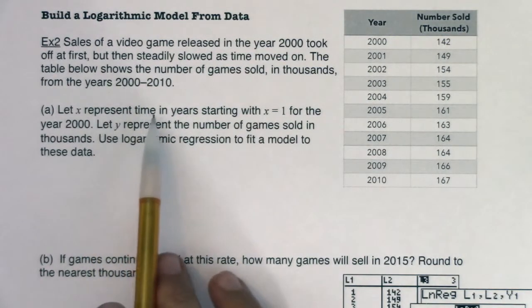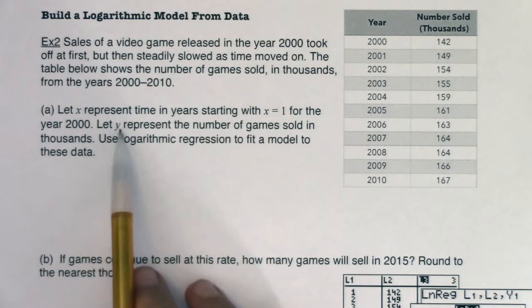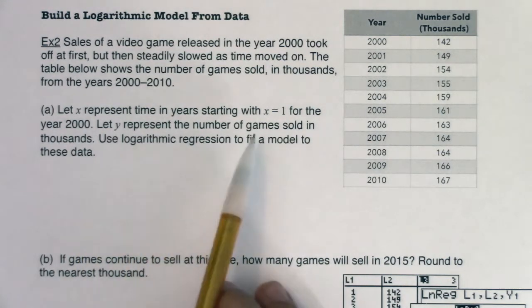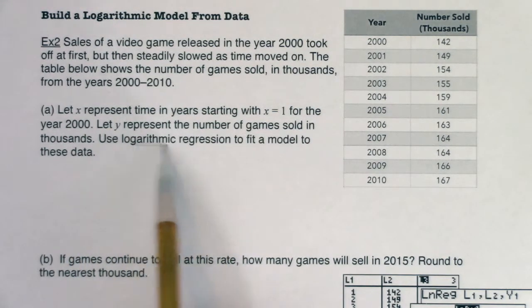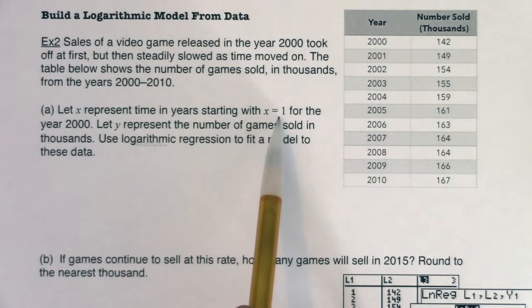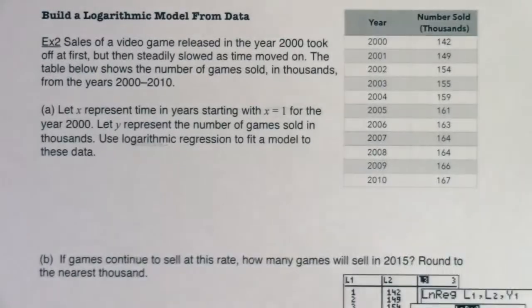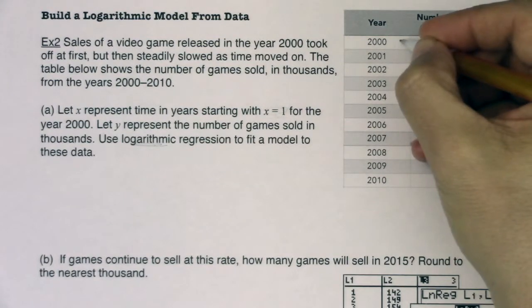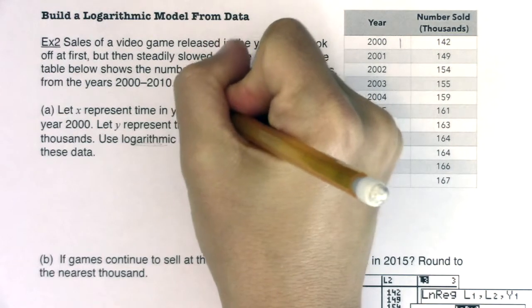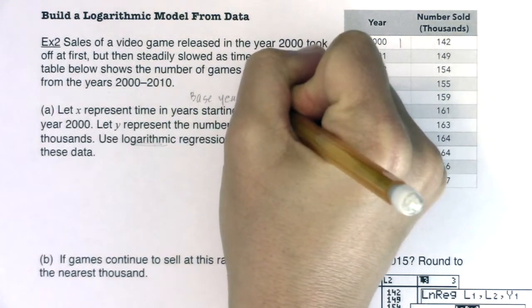Let x represent time in years starting with x being one for the year 2000. Let y represent the number of games sold in thousands. Use logarithmic regression to fit a model. They gave us the base year — this is different than what we normally do. They're setting x equal to one to be 2000, so this isn't going to be year zero, it's going to be year one. Another way of saying that: they're setting the base year to be 1999.